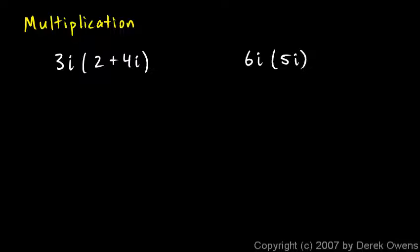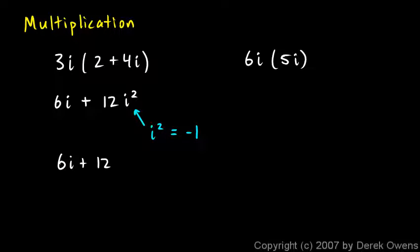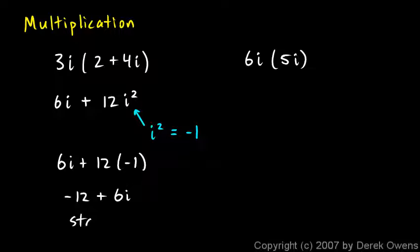3i times 2 gives me 6i, and 3i times 4i gives me plus 12i squared. Whenever you multiply complex numbers, you may get an i squared term. Remember that i squared equals negative 1, since i is defined as the square root of negative 1. So this becomes 6i plus 12 times negative 1, which I rewrite as negative 12 plus 6i. That's in standard form.